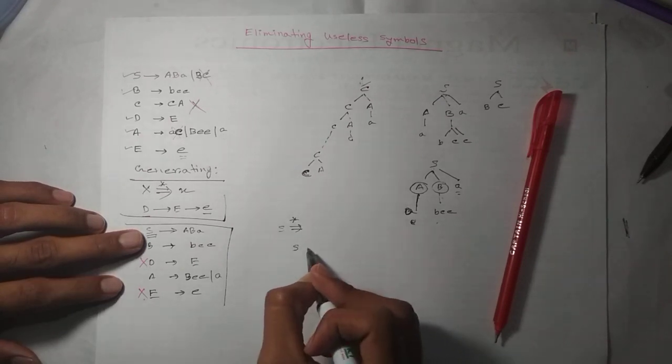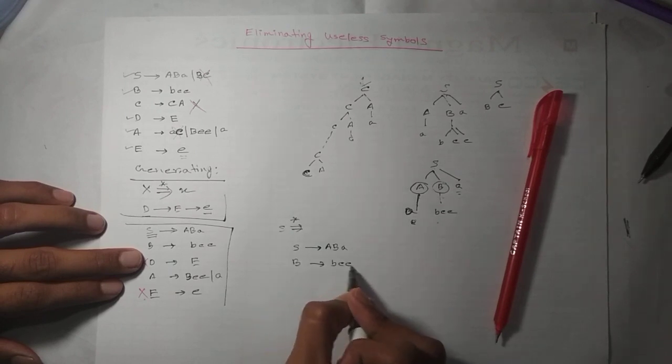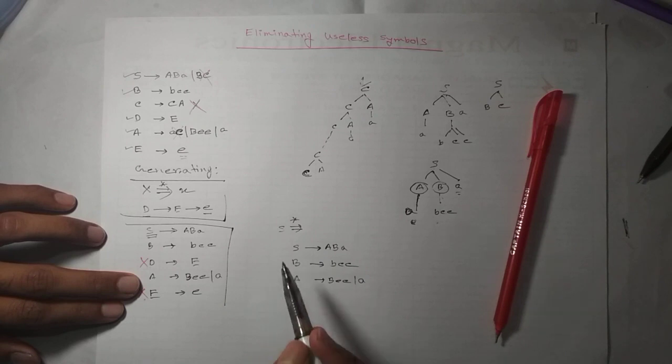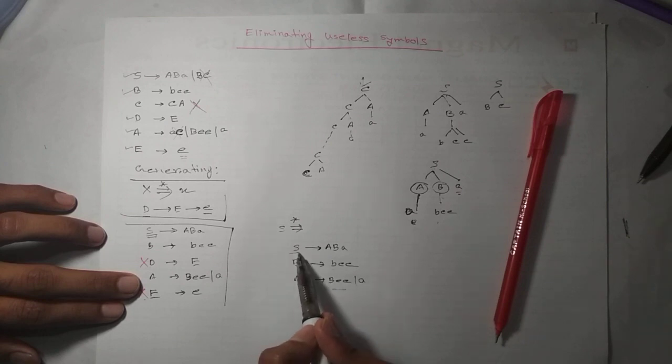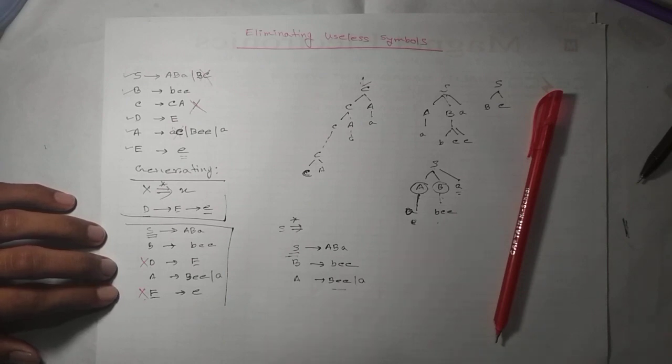So this is the grammar. We have symbols A, B, C, and E. This is a simple grammar example.